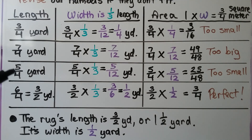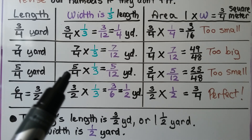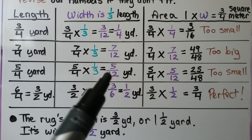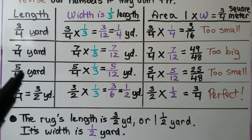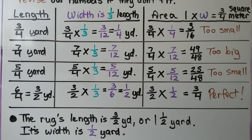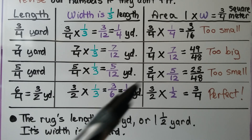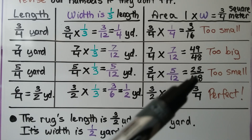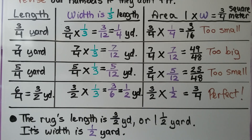To find one-third of five-fourths for the width, we multiply five-fourths times one-third, which is five-twelfths yard. To get the area, we multiply five-fourths times five-twelfths and get twenty-five forty-eighths. Twenty-five is almost half of forty-eight, so that's almost one-half — still too small, not three-fourths.